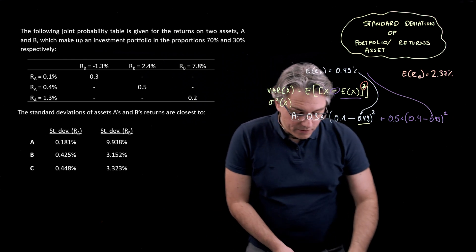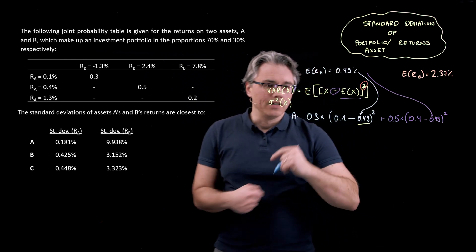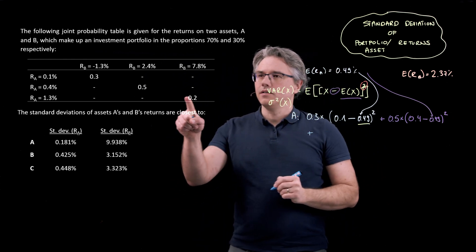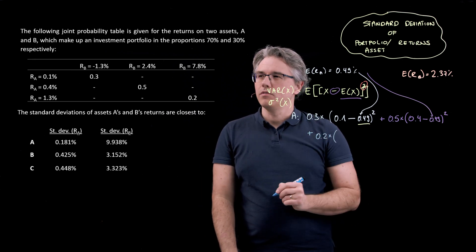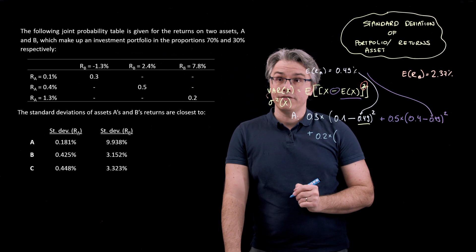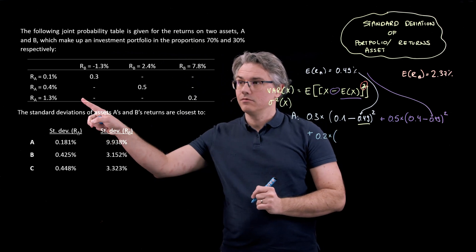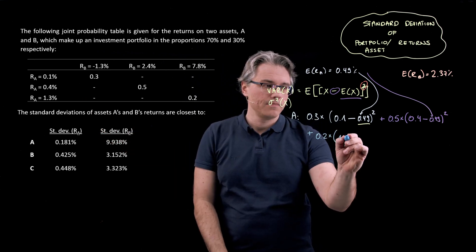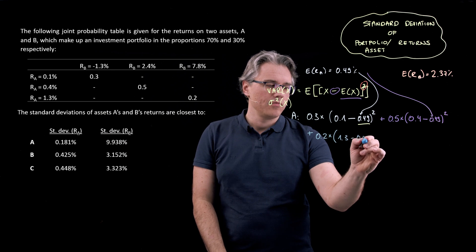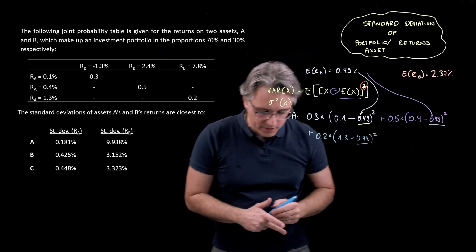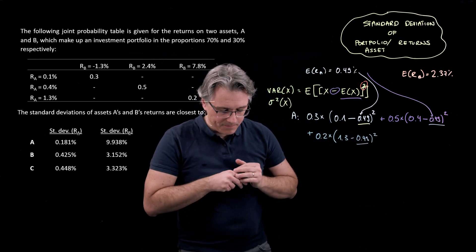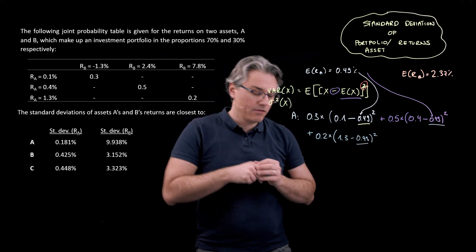For the third one, we're simply going to have whatever is left, a probability of 0.2 times, open bracket, the value that we see over here, 1.3, minus 0.49 squared. Again, as you can see, this 0.49 keeps appearing absolutely all the time.